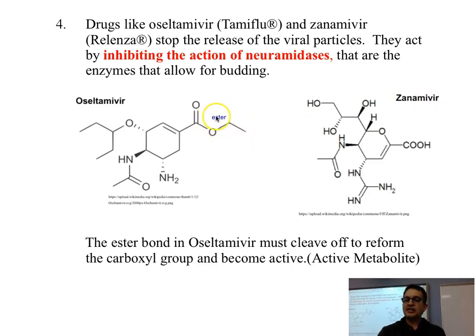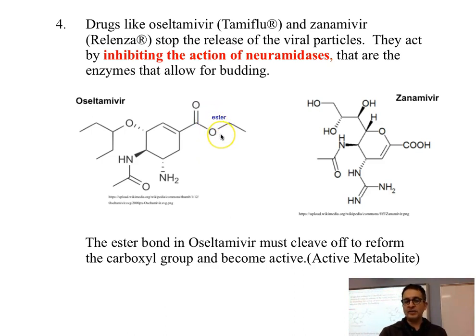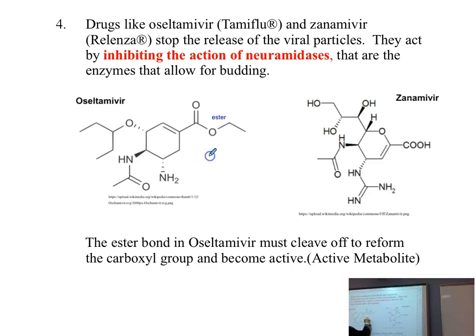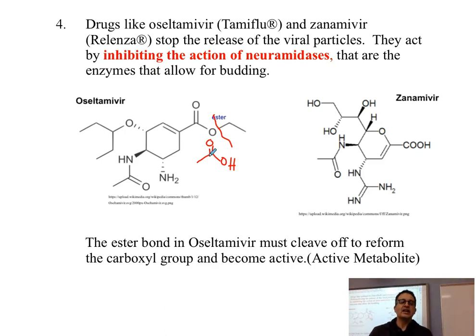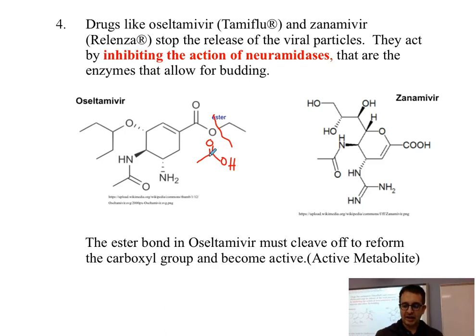Oseltamivir in particular needs to react in the body to become the active metabolite. It breaks the ester bond — it becomes hydrolyzed, so we add water to this ester bond — and that part becomes a carboxylic acid. This carboxylic acid group is part of the active metabolite. The reason the drug contains the ester group rather than the carboxylic acid group is that esters are less polar than acids, which allows it to go into the cell more readily.